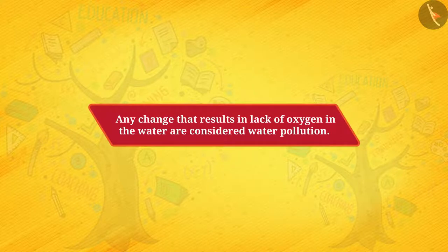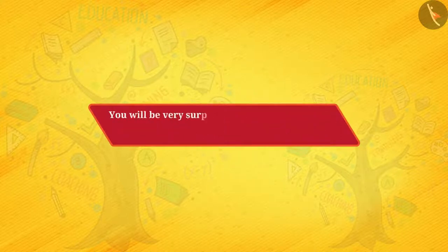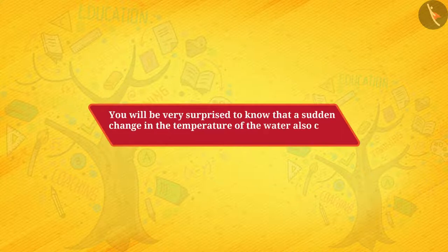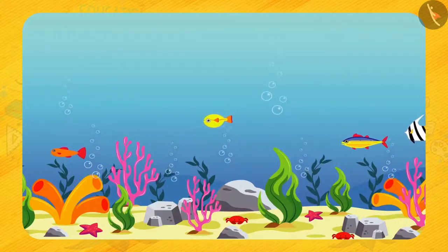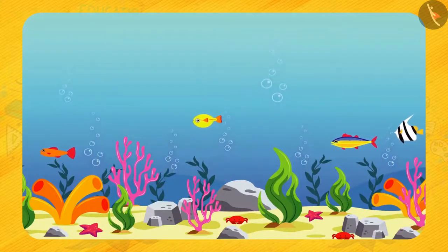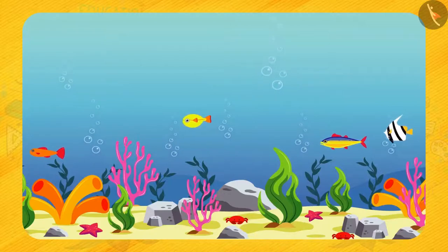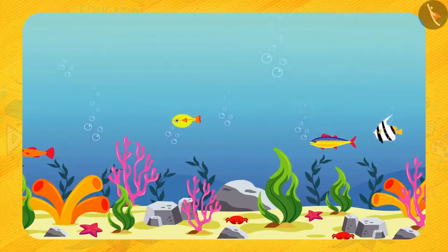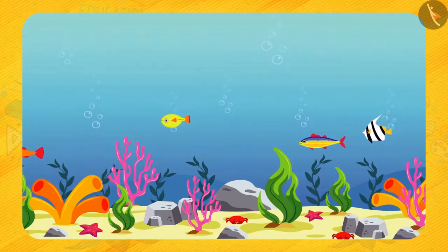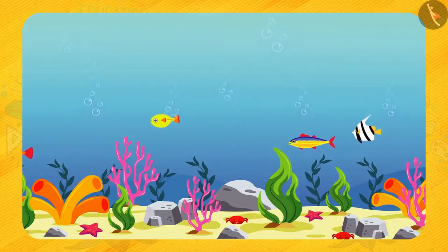You will be surprised to know that a sudden change in the temperature of water also causes water pollution. But how? Let's see. Aquatic animals are used to a certain range of temperature inside the water. Anything that alters or changes the temperature of water also affects the aquatic plants and animals, which again leads to water pollution.